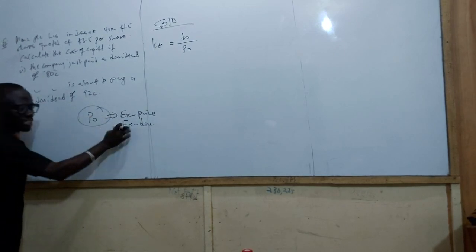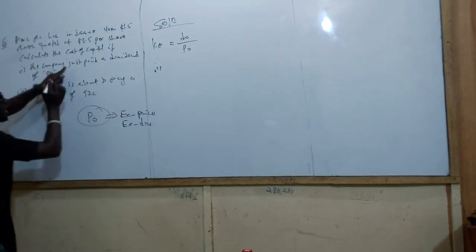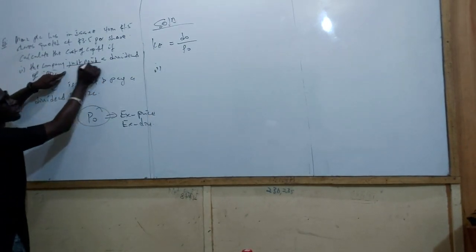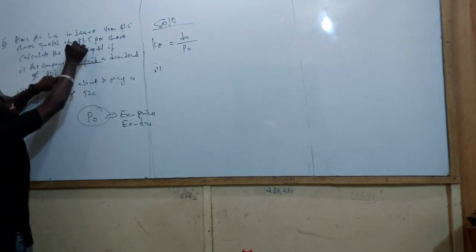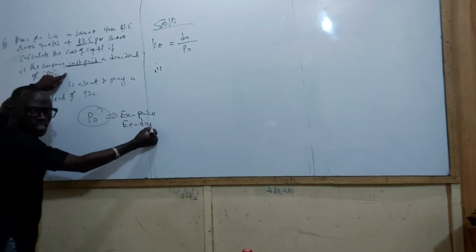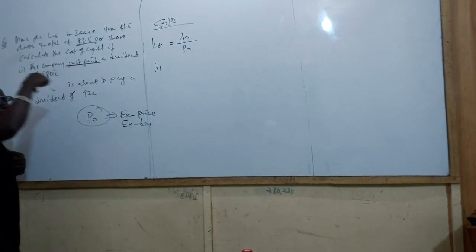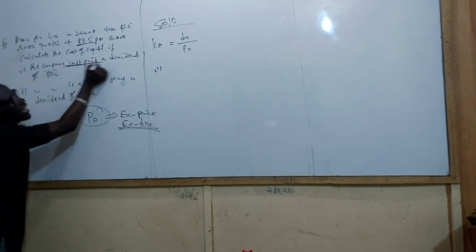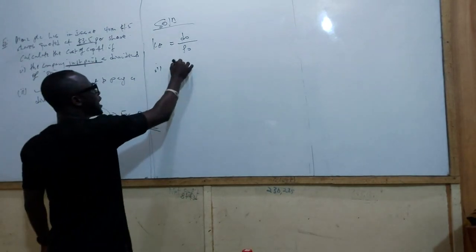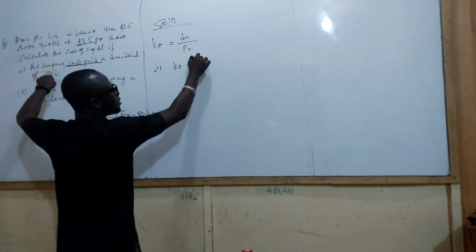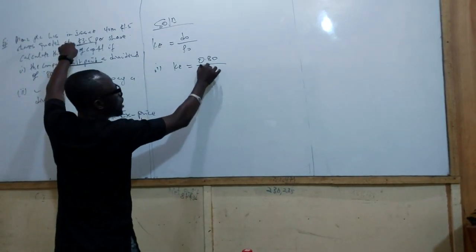For part (A), the key word is that the company 'just paid' the dividend. If the company just paid the dividend, then this price is an ex-dividend price — it excludes the dividend. If you buy the share right now, you will not receive the dividend because it has just been paid. So KE equals $0.80 over the market value of $3.5.